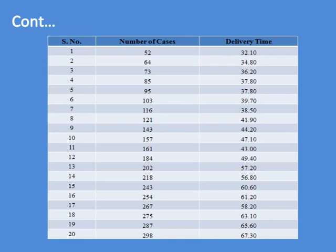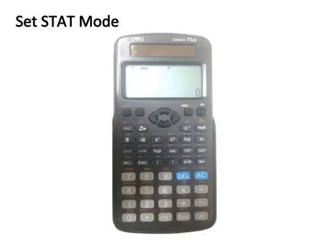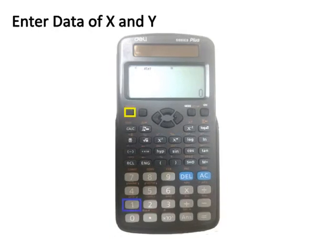First, when you turn on the calculator, change the mode from Math to Stat. Press the Mode button — bordered in red — then press button 3, bordered in green, to switch to Stat mode. After setting Stat mode, you can enter data for X and Y.